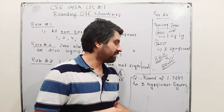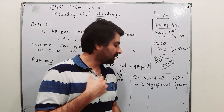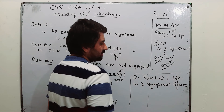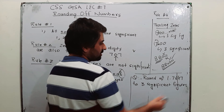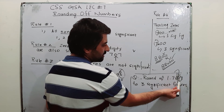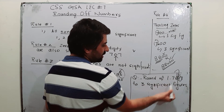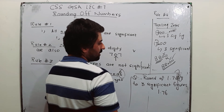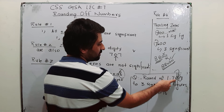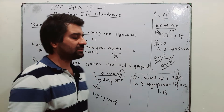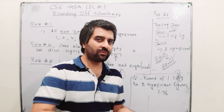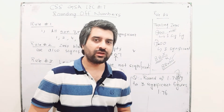We have 5 significant figures and we want 3, so the last two will be dropped. Restricting to 3 significant figures, the following digit after the 3rd significant figure is 4, which is less than 5. So the answer will not change — you do not increase the previous digit. The answer is 1.76. We now have 3 significant figures. The rules are the same as for decimal places.